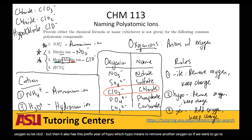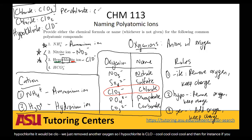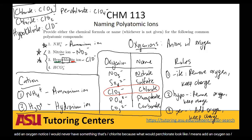If you add the prefix 'per-', you actually add an oxygen. So if I take chlorate and make it perchlorate, that would be ClO4- — I added an oxygen. Notice you would never have something called 'perchlorite,' because perchlorite would be ClO3-, which is just chlorate. So perchlorite doesn't make sense. You add the prefix 'per-' to your '-ates,' and you add the prefix 'hypo-' to your '-ites.'